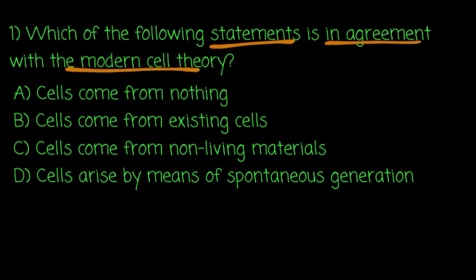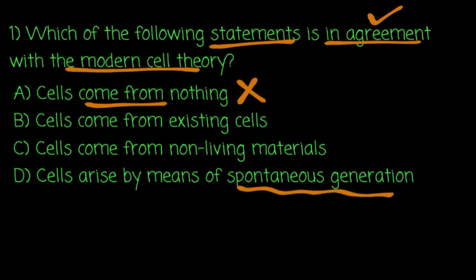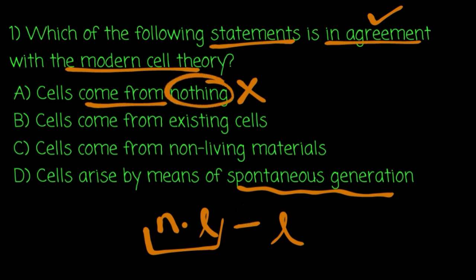So, modern cell theory — cells come from nothing? How do we look at spontaneous generation? Sales arise by means of spontaneous generation. This means that we are going to disprove that learning.